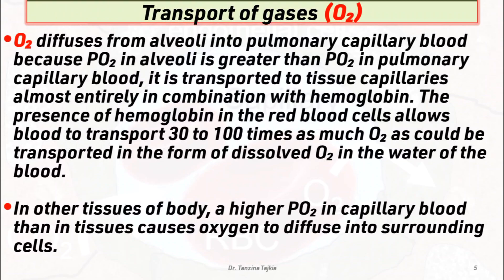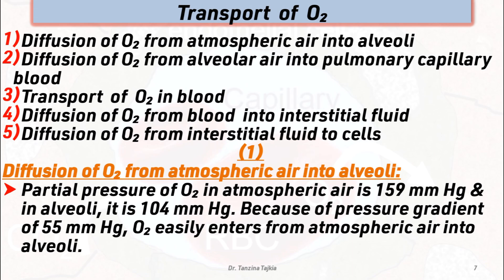In the transport of oxygen, there are five steps. First, diffusion of oxygen from atmospheric air into the alveolar air. Second, diffusion of oxygen from alveolar air into the pulmonary capillary blood. Third, transport in the blood. Fourth, diffusion of oxygen from blood into interstitial fluid. Finally, diffusion of oxygen from interstitial fluid into cells.